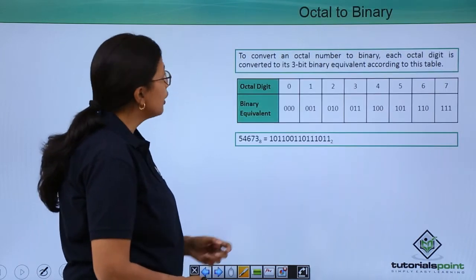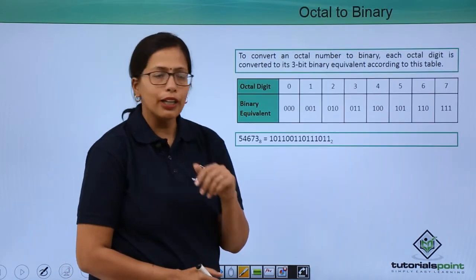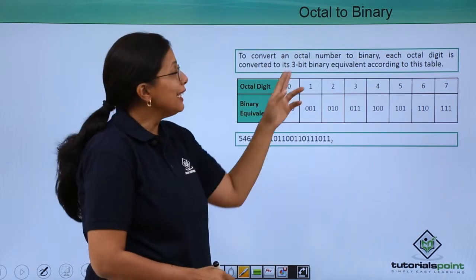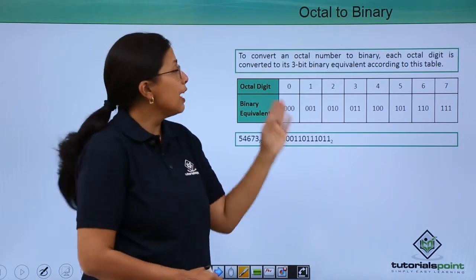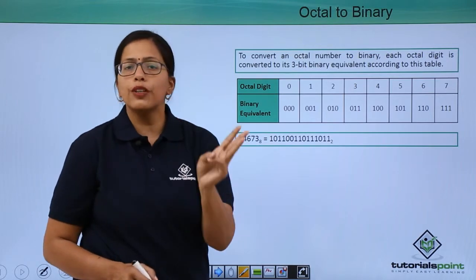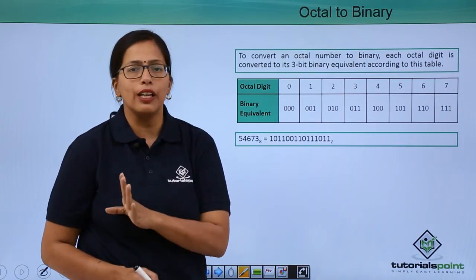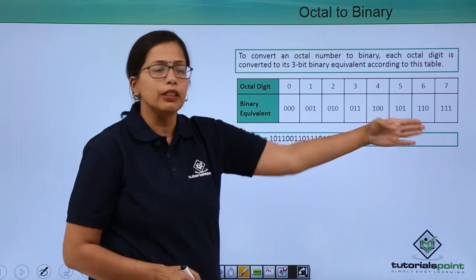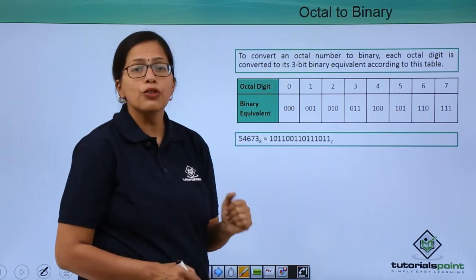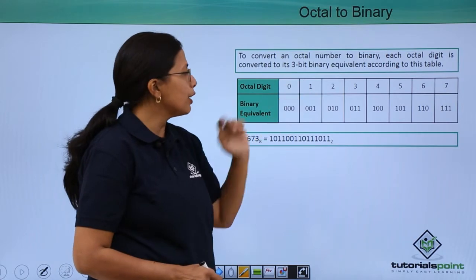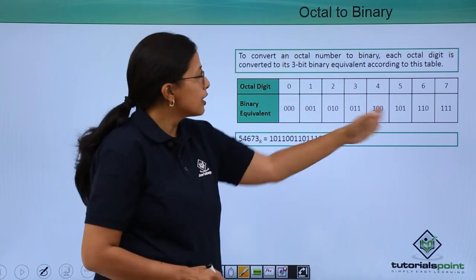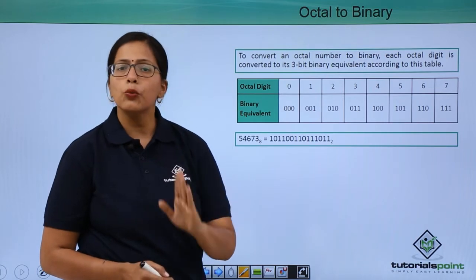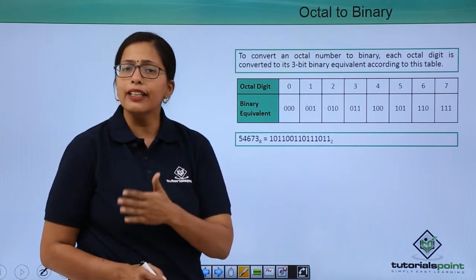Now, let's see how we can convert an octal number to binary number. To convert an octal number to binary, each octal digit is to be converted to its 3-bit binary number equivalent. This I have shown here in the form of a table. 0 is equivalent to 000. 1 is equivalent to 001. Similarly, till 7 if we go, it is equivalent to 111. We are doing exactly reverse.